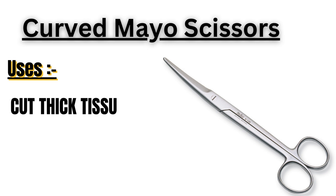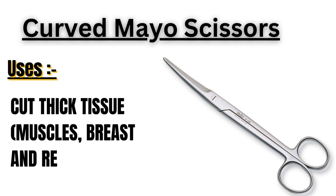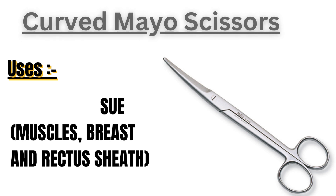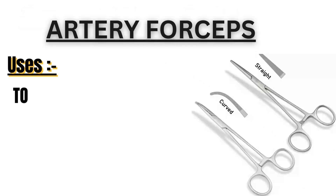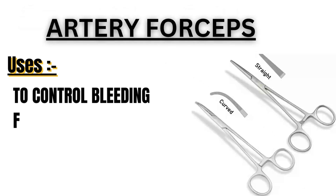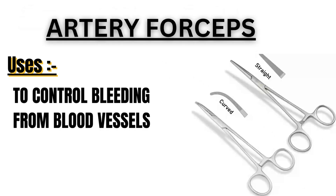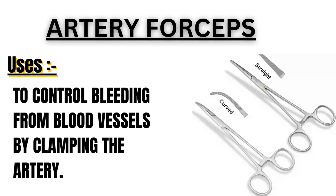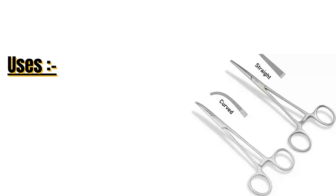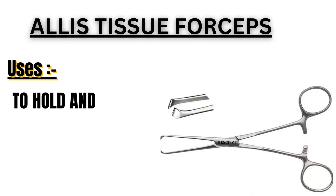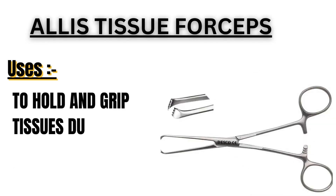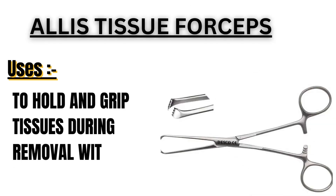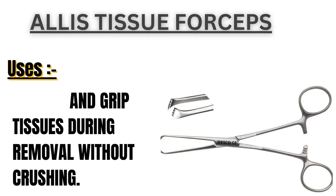Curved Mayo Scissors: it is used to cut thick tissue, muscles, breast and rectus sheath. Artery Forceps: it is used to control bleeding from blood vessels by clamping the artery. Allus Tissue Forceps: it is used to hold and grip tissues during removal without crushing.